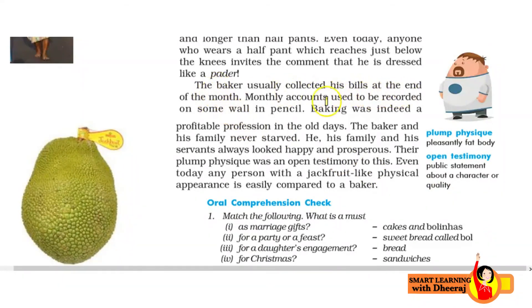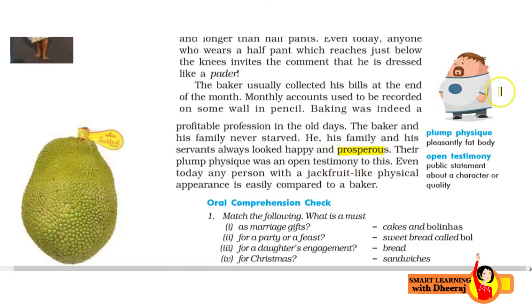The baker usually collected his bills at the end of the month. Jo baker hote the, woh mahine ke ant mein apna bill collect karte the. Monthly accounts used to be recorded on some wall in pencil. Baking was indeed a profitable profession in the old days — jo baking ka kaam tha, woh ek bahut hi zyada profit ka business tha. The baker and his family never starved — starved means bhooke marna. His family and his servants always looked happy and prosperous. Unka jo plump physique hota tha — woh moote log hote the — woh ye darshata tha ki unka kaam bahut hi zyada profitable hai.